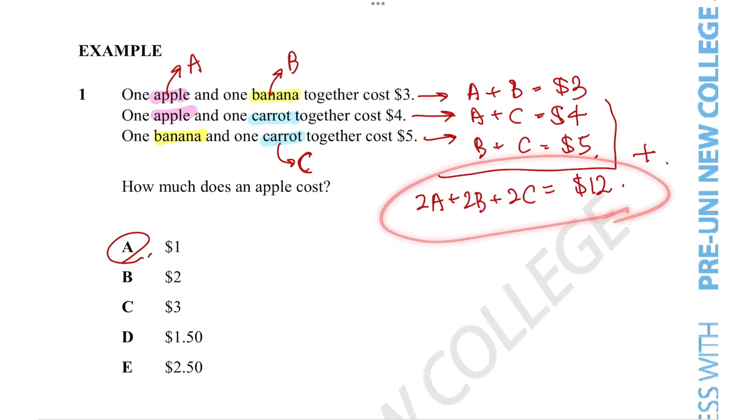Since everything in this equation is divisible by 2, I'm going to divide the entire equation by 2 to give me A + B + C = $6. So why have I done this when all I talked about before was removing as much of the letters as possible to try and get an answer? Well, I'm actually going to do exactly that.